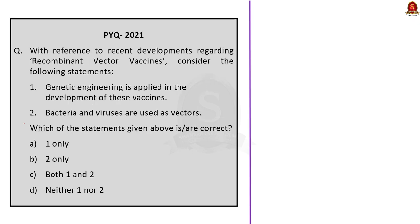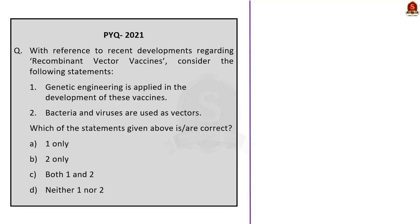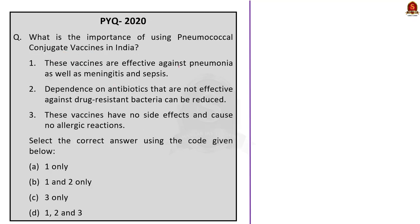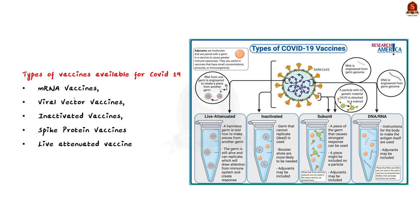UPSC is asking repeatedly on the topic of vaccines. In 2022, they asked about COVID-19 vaccines like Covishield, Sputnik V, and Covaxin. In 2021, they asked about recombinant vector vaccines. In 2020, about pneumococcal conjugate vaccines. In 2019, about hepatitis vaccines. There are different types of vaccines for COVID-19: mRNA vaccines, viral vector vaccines, inactivated vaccines, spike protein vaccines, and live attenuated vaccines. The mRNA vaccines, created using messenger RNA, introduce a piece of mRNA into the body so cells can produce viral protein, prompting an immune response. Examples include Pfizer and Moderna.